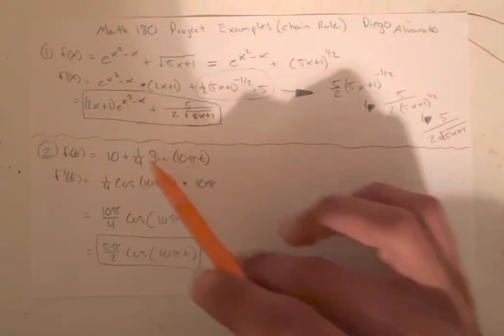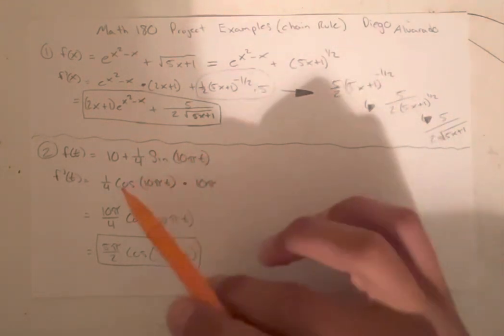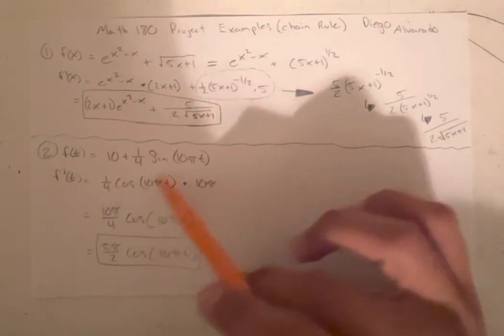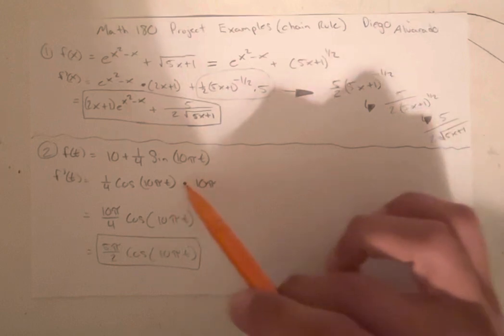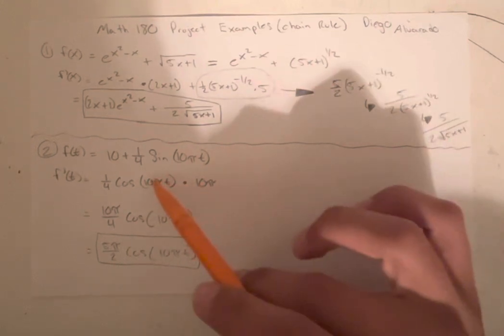So you get 1 4th cosine of whatever is in here. So it's cosine 10 pi over t times the derivative of whatever is inside. So you get the derivative of this.